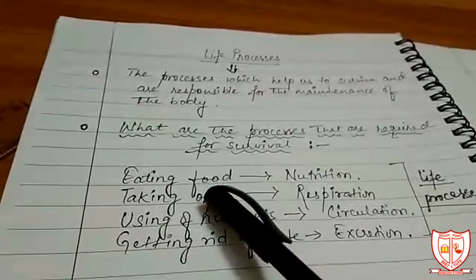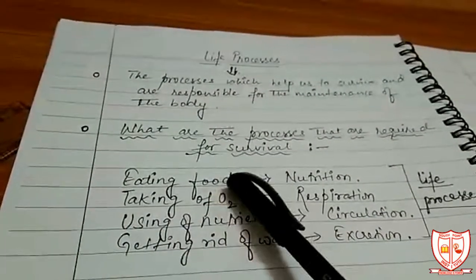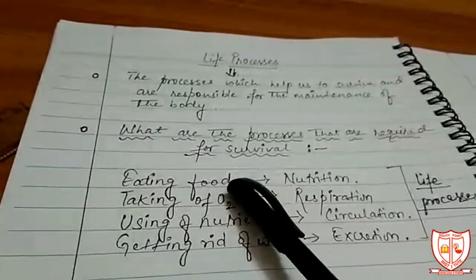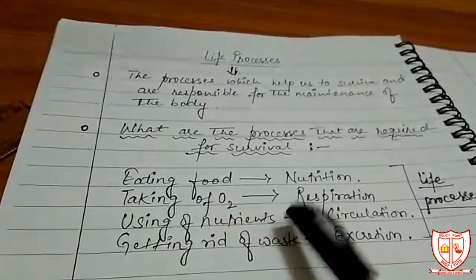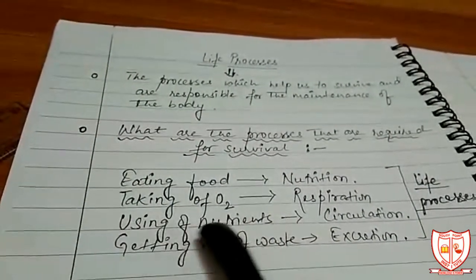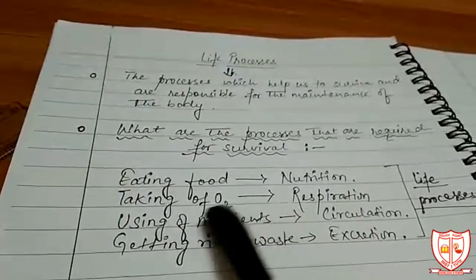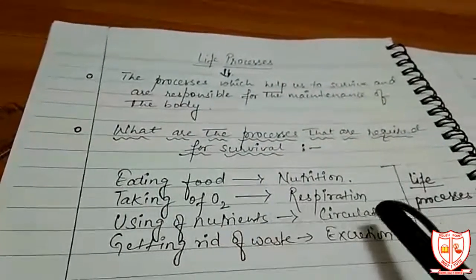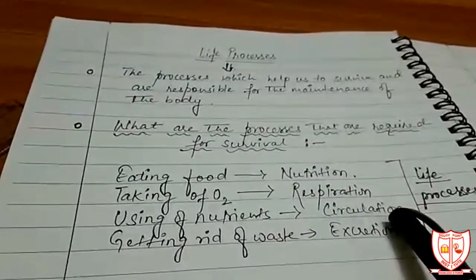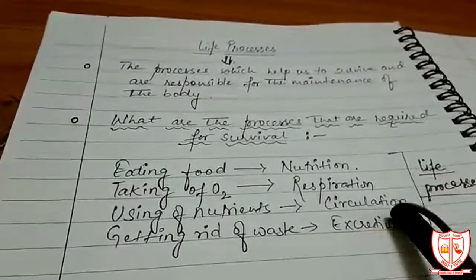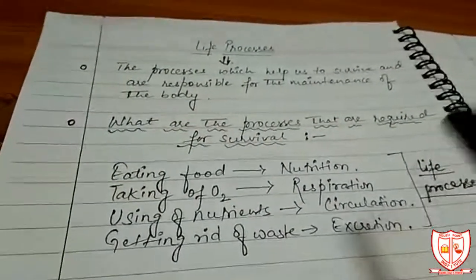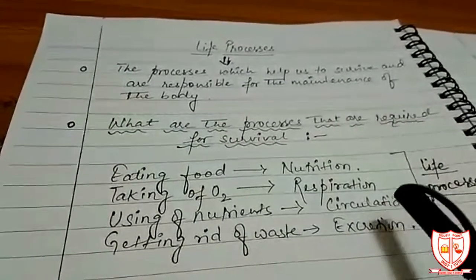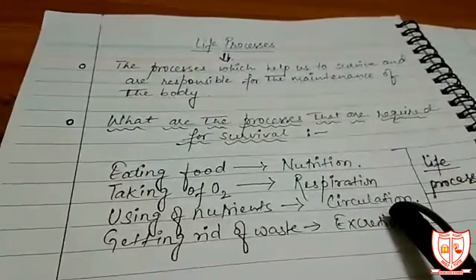After this, when we take in oxygen and food — the nutrients, the oxygen, and other things — we will have to use all these nutrients. And they can only be used when they are circulated or transported to the various parts of our body. So circulation is also very important for us, and our life depends on that process.